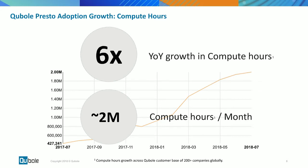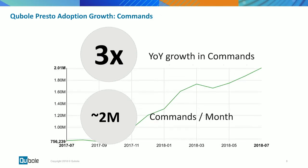So basically we recommend the right engine to our customers for the right workload — that is correct. Different personas want to use different engines for different use cases, which means there is increasing demand for a platform like Cubo that supports multi-engine. We clearly see six times growth overall, and specifically on Cubo Presto we see about two million commands fired every month — representing three times growth every single year.